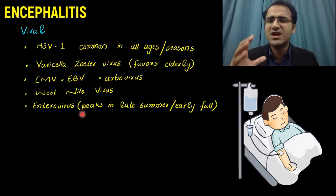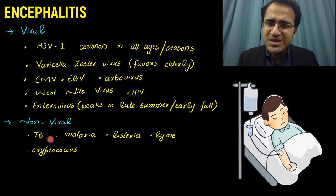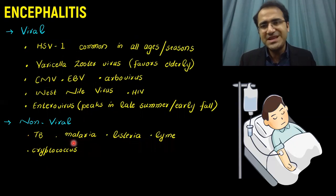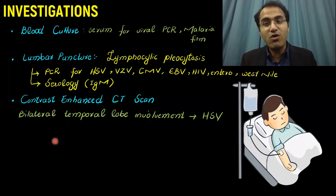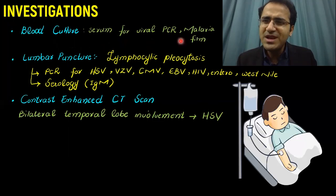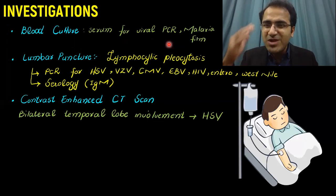Non-viral causes of Encephalitis include TB, malaria, Listeria, Lyme, and Cryptococcus, in which TB and malaria are the important ones. Investigations that you need to do in a patient of Encephalitis include blood cultures — look for the source of infection. Do malarial film to look for malaria. If malaria is endemic in your area, cerebral malaria can present like bizarre altered behavior with an infectious prodrome.